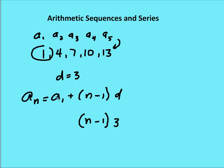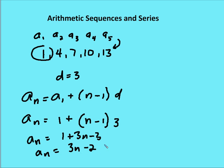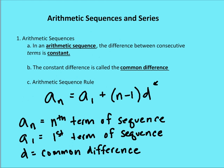Plus a sub 1, which we figured out was 1. So I have 1 plus n minus 1 times 3 is equal to a sub n. Now we want to simplify this further. So a sub n is equal to 1 plus 3n minus 3, or a sub n is equal to 3n minus 2.